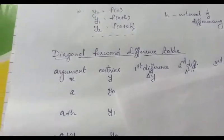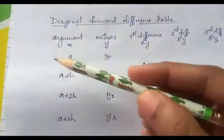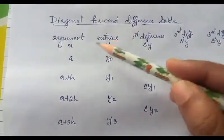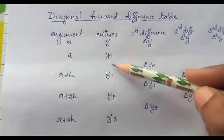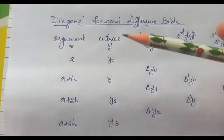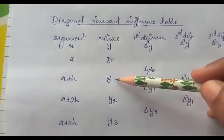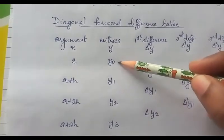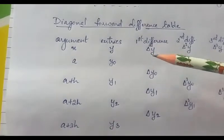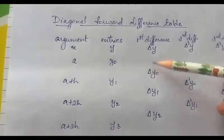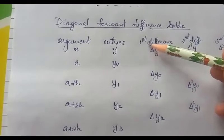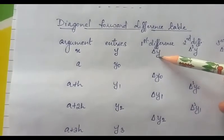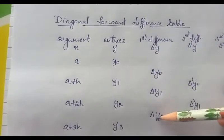Now let us look at the forward difference table. These are the arguments; the x values are written here. The corresponding entries are denoted by y0, y1, y2, y3. The difference between the entries — that is, the difference between y1 and y0 — is denoted by delta y0, and it is called the first forward difference. The first forward difference is generally denoted by the symbol delta y.